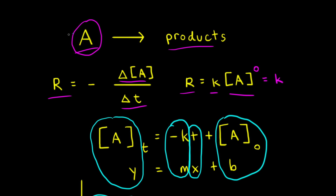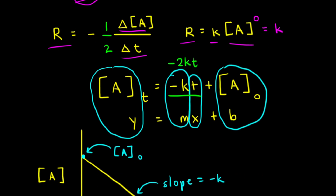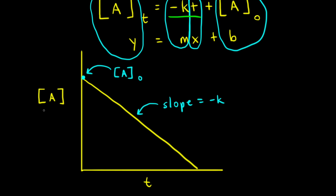Everything we've discussed assumes a coefficient of one in front of the concentration of A. However, if we have a coefficient of two in front of A in our balanced equation, we need a stoichiometric coefficient of one half, which changes the math. Instead of getting negative KT, we would get negative two KT after integration, meaning the slope of the line when graphing concentration of A versus time would be equal to negative two K. Textbooks often assume the coefficient is one, giving the slope as negative K, but if the coefficient is two, the slope should technically be negative two K.